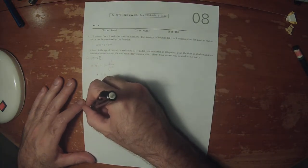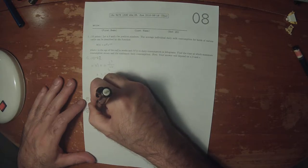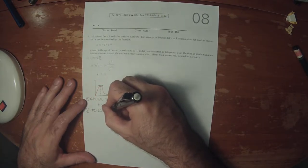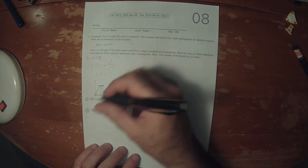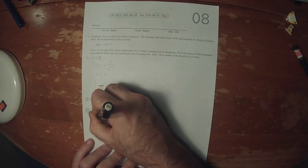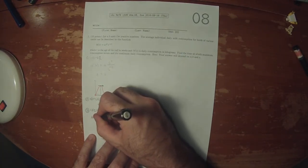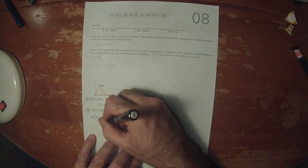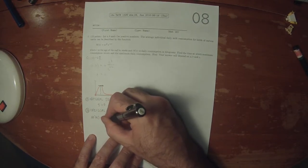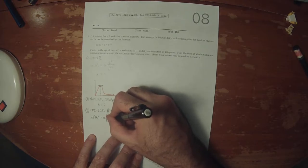So we'll find the derivative. The derivative will be A multiplied by the derivative of T to B, E to negative CT...